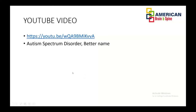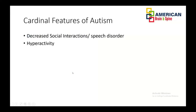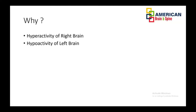What are the cardinal features of autism? There are two features that stand out: decreased social interactions and speech disorder, and the other is hyperactivity. These are the cardinal features of autism. We think it happens due to hyperactivity of the right frontal lobe and hypoactivity of the left frontal lobe — this is the simple theory we put forward to explain autism.